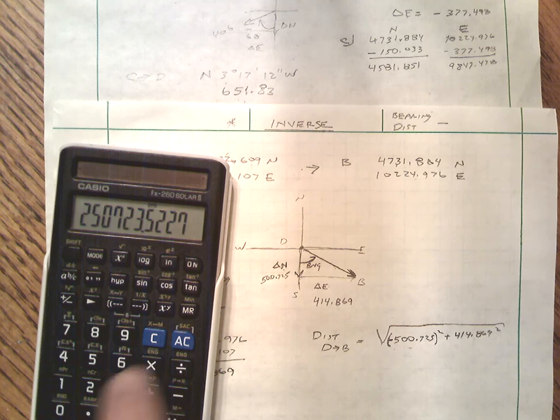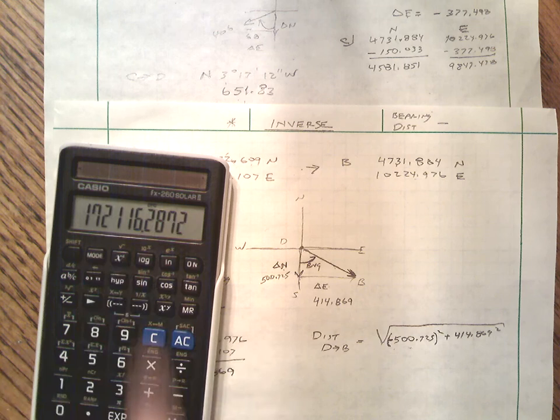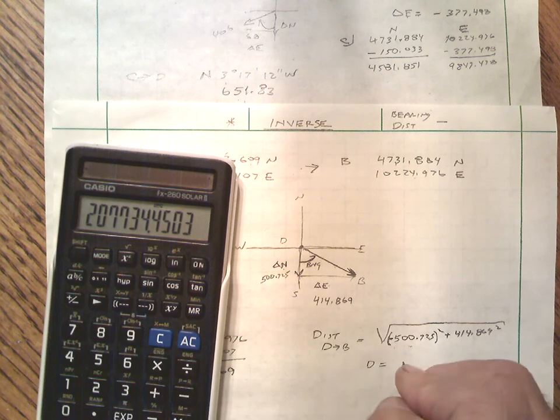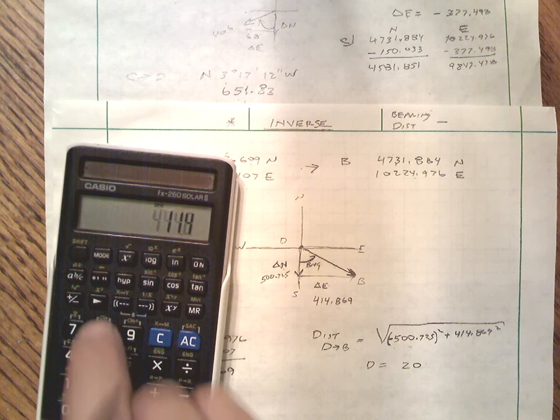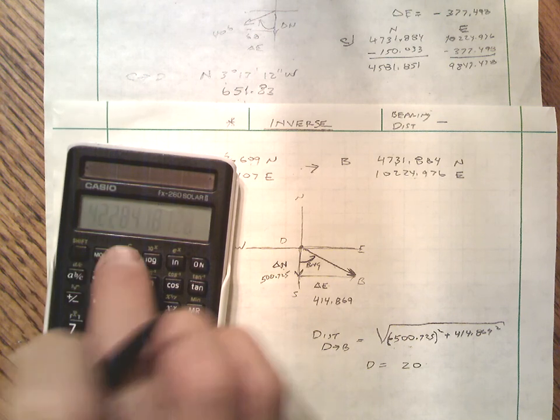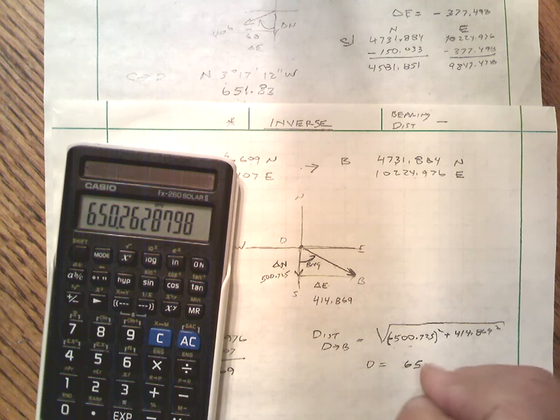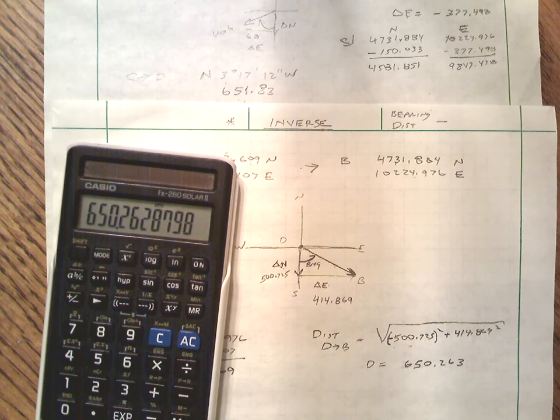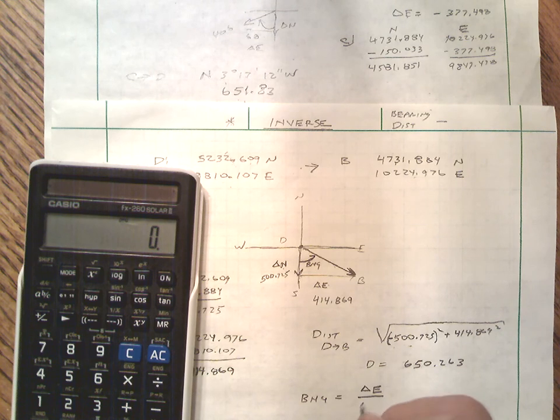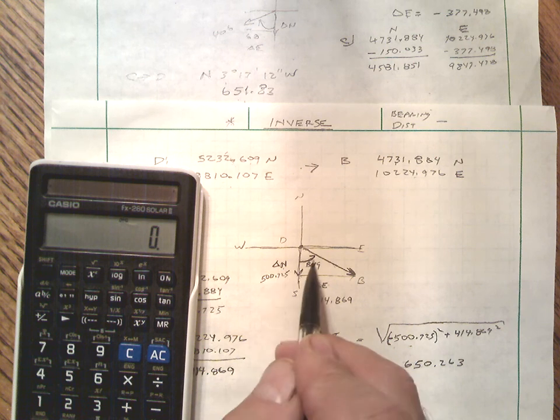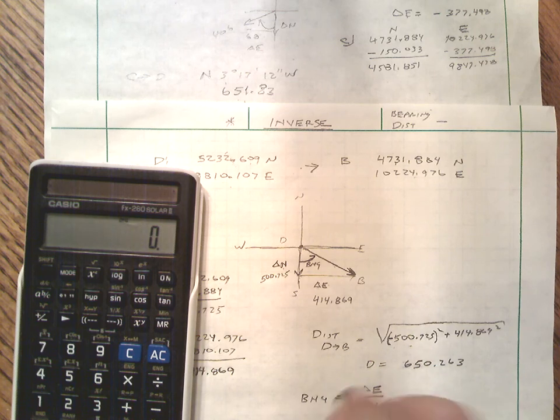So our distance then is 650.263. So that becomes our distance—that's usually the easy part. Most people get that. The bearing angle is going to be the change in easting over the change in northing, literally opposite over adjacent. Again, we're looking for this angle, so we have opposite over adjacent—that's going to be the tangent function. Let me clean that up, I apologize. That is going to be the inverse tangent function.